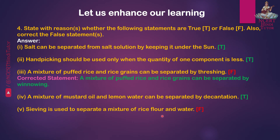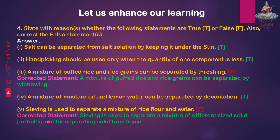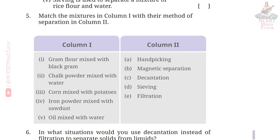Fifth — Sieving is used to separate a mixture of rice flour and water. Answer: False. Corrected statement: Sieving is used to separate a mixture of different-sized solid particles, not for separating solid from liquid.